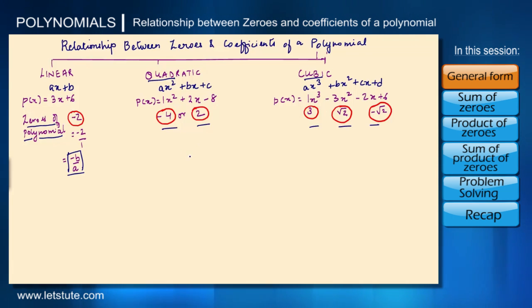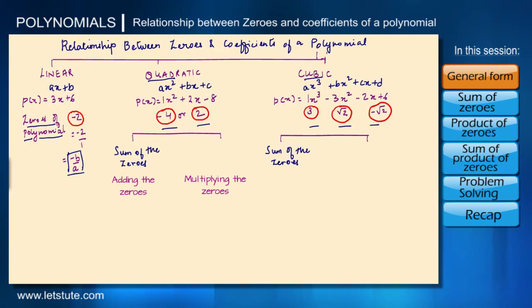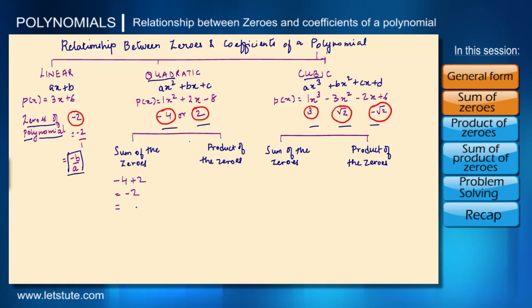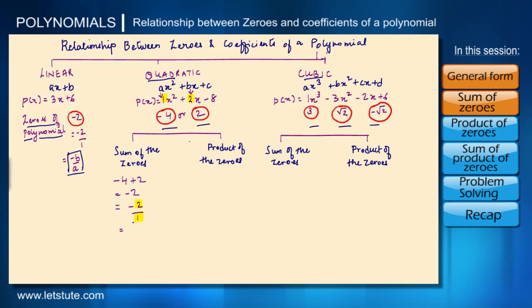Let's now move on to quadratic and cubic polynomials. Since they have more than one zero, what will happen if we add the zeros or multiply the zeros? Let's see if we can establish a similar relationship. The zeros are minus four and two, so the sum would be minus four plus two, which equals minus two. Minus two is also written as minus two upon one, where two is the coefficient of x and one is the coefficient of x squared. So this is equal to minus b upon a.